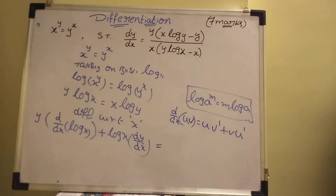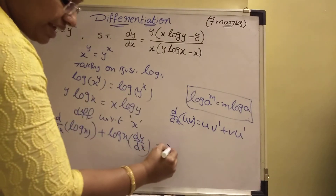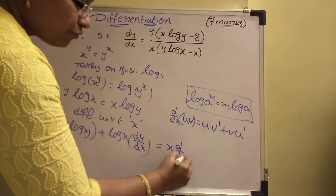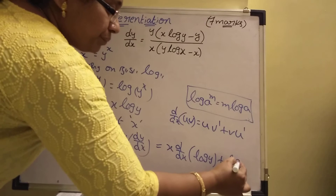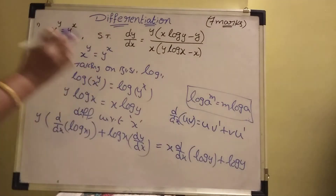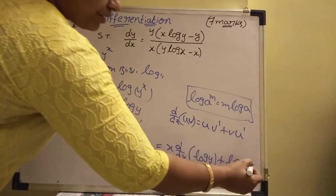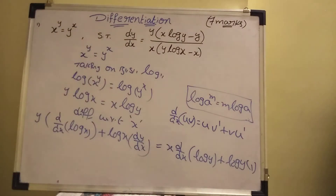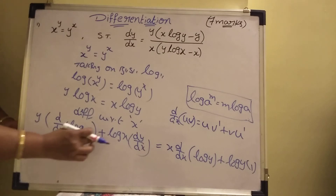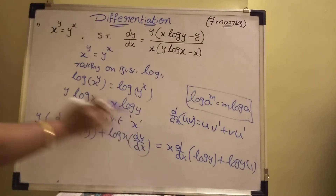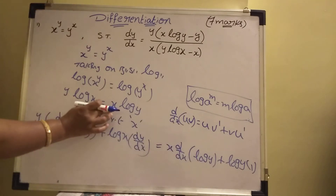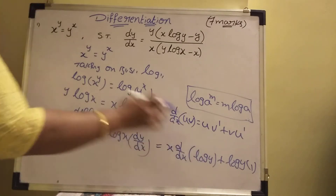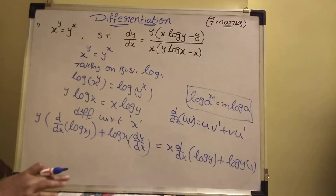Equal to the right hand side: here also uv. u means x, so x into d by dx of log y, plus log y into d by dx of x, which is 1. So: x·d/dx(log y) plus log y.